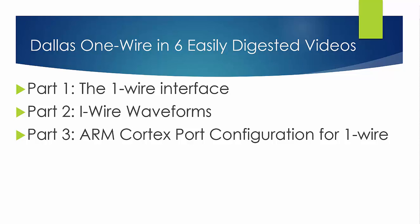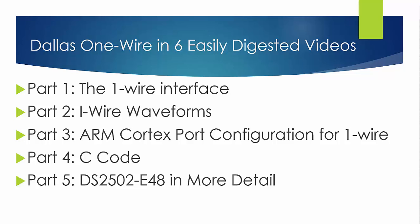In part three, we'll discuss the actual configuration requirements for the port on the Cortex STM32F4 we're using. Part four, we're going to review the C code. Part five discusses communication with the DS2502-E48, which is an EEPROM with a unique serial number MAC address in it. And part six discusses the Dallas one-wire CRC, how it's accomplished, and the code to do that.